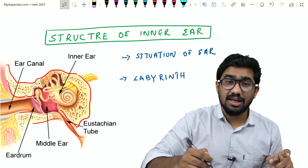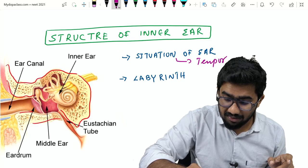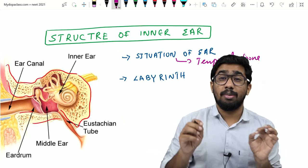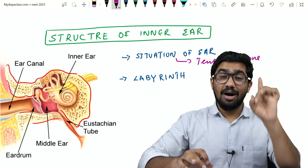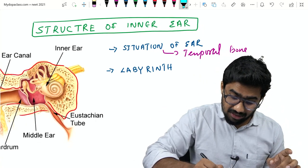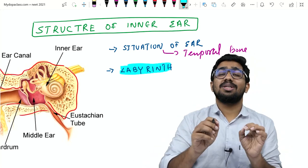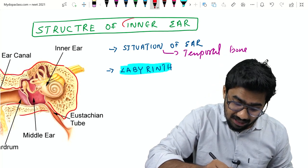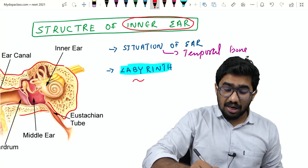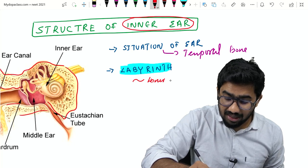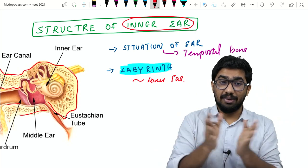Point number one to remember: the ear is situated within the temporal bone. Whenever you're reading your NCERT textbook, you'll see a confusing word related to the ear — that word is 'labyrinth.' The actual meaning of labyrinth is inner ear. So wherever you see the word labyrinth, you can replace it with inner ear.